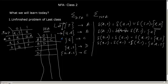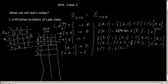Now my pointer will move to the next element that is C, because B is filled up. Understood? So for C, what will happen? C comma 1 will be delta of Q comma 1. What will it be? It will be Q comma 1 is C comma 0.